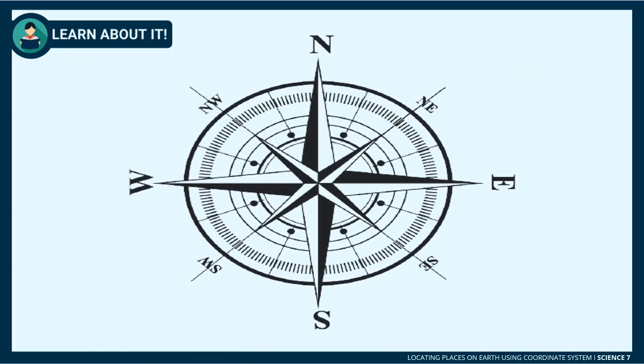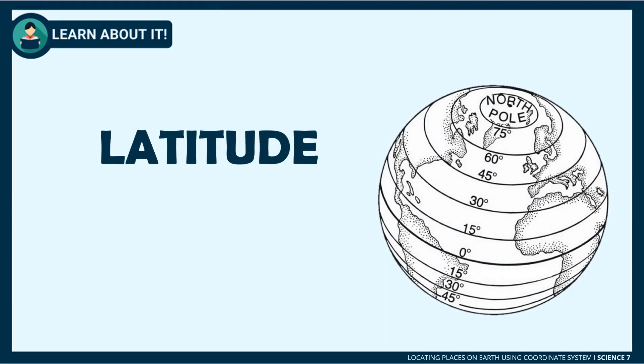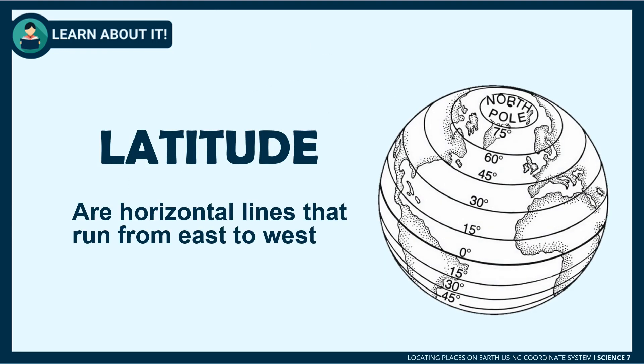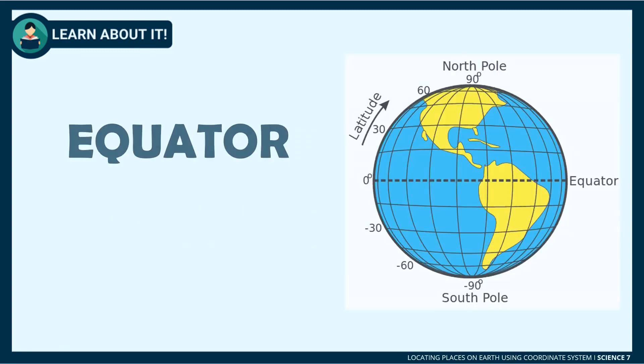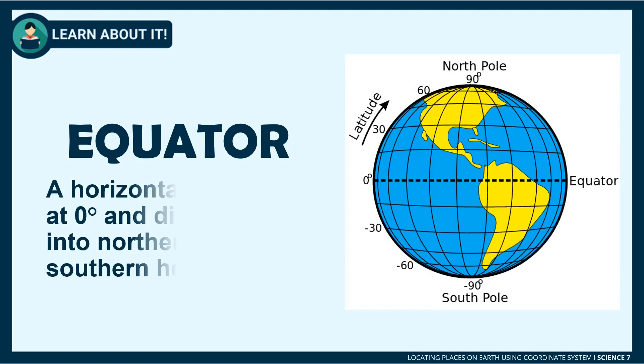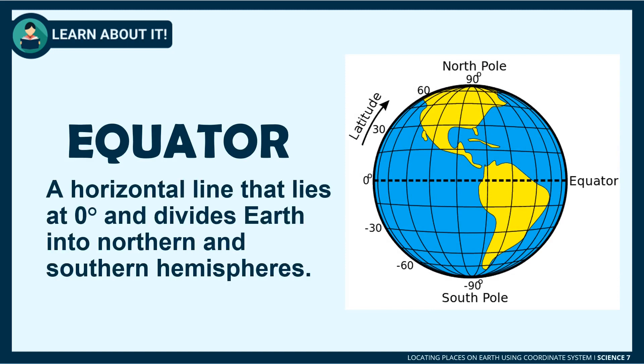It is very necessary to be familiar with the directions to correctly get the coordinates of a place. Lines which run horizontally from east to west are called latitudes. Latitudes are parallel to each other; hence latitudes do not meet or intersect.